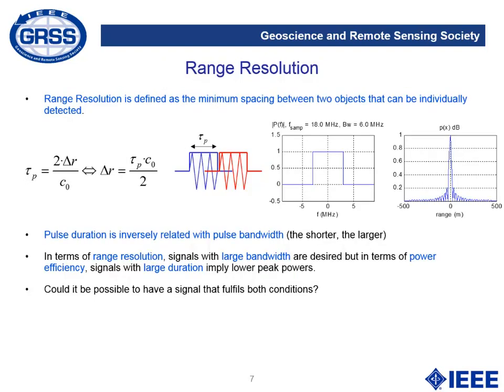If we want to use a radar to make a kind of image, it is important to know the range resolution, defined as the minimum spacing between two objects that can be individually detected. The narrower the pulse, the better the resolution. In general, pulse duration is inversely related with pulse bandwidth: if we want a short pulse, we need to transmit a large bandwidth. In terms of range resolution, signals with large bandwidth are desired, but for power efficiency we want signals with large duration because they imply lower peak powers.